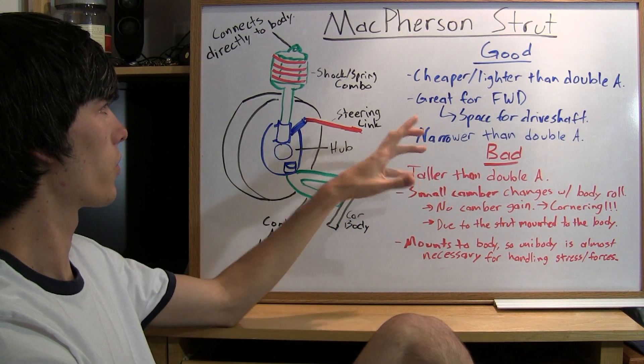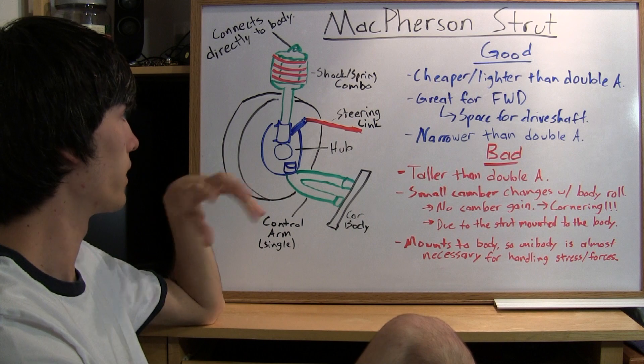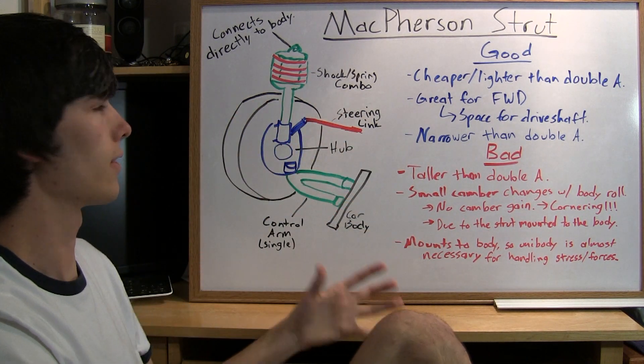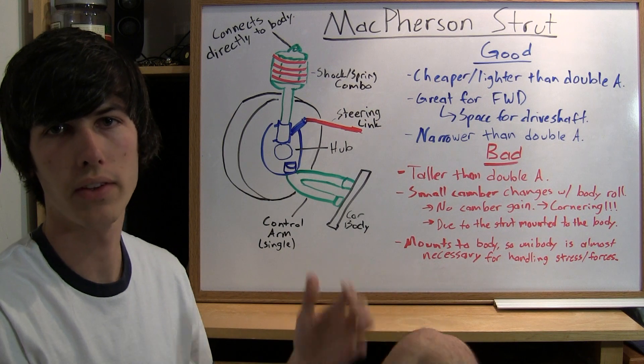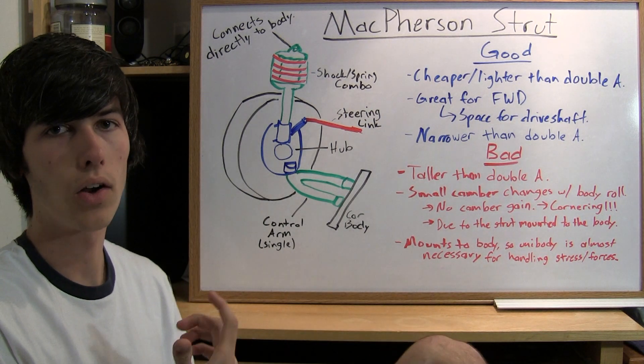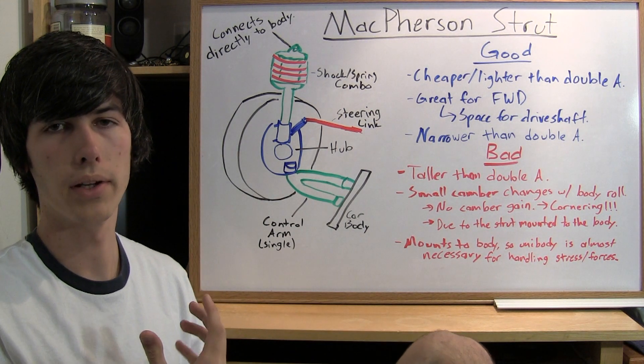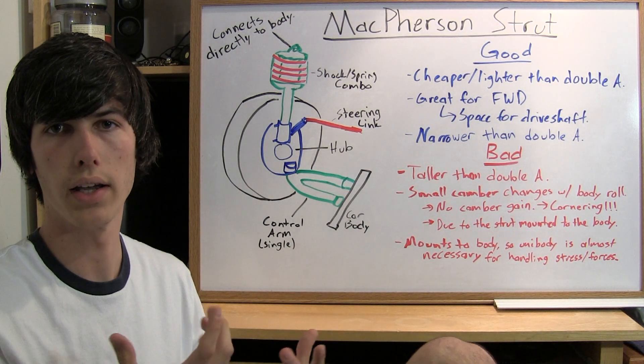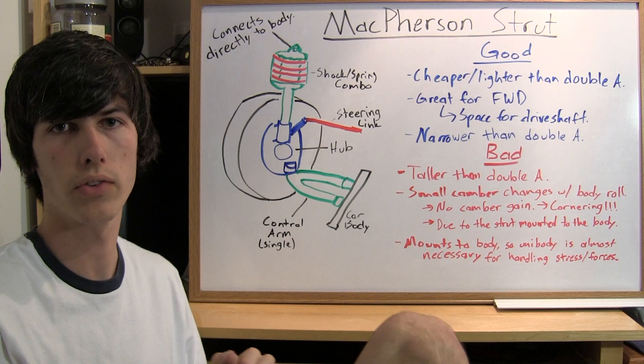So what's so great about the McPherson strut design? Well, it's cheap, fairly simple, and lighter than a double A arm, so there are benefits with weight and cost savings. Many companies will go to the McPherson strut simply because it can get the job done for a cheaper price, and the consumer won't notice the difference.